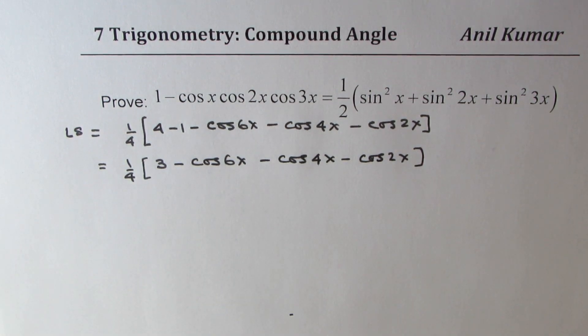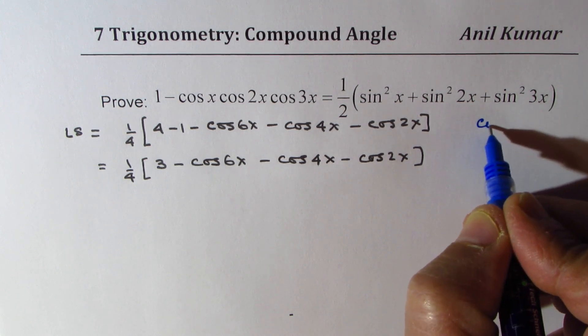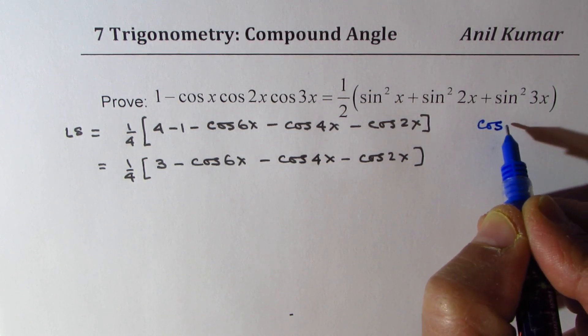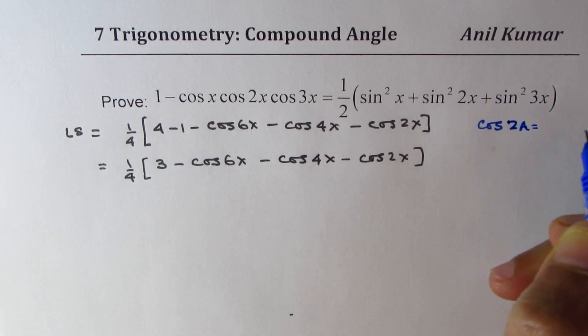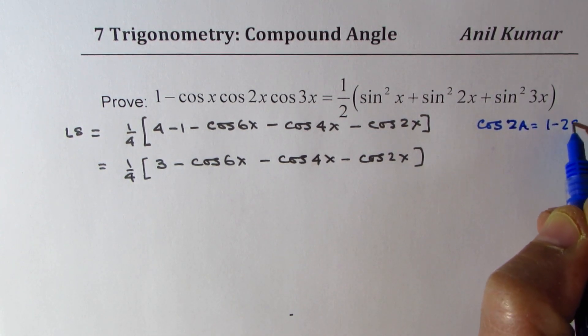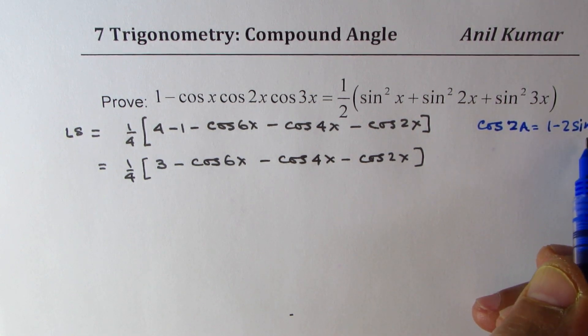Now, you also know that the double angle formula for sine square x. So, we have cos 2a is equal to 1 minus 2 sine square a. So, from here, we can write, because we need sine square.